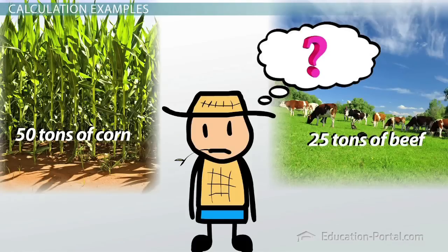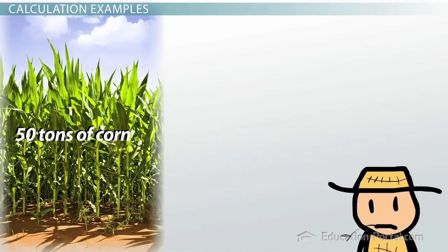Now we have all the information we need to calculate opportunity cost, but we need to know which opportunity cost we're trying to measure based on which possibility we want to choose. Let's start by looking at it from the corn perspective. The opportunity cost of producing 50 tons of corn is equal to how many tons of beef we could have produced, which of course is 25 tons.